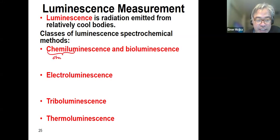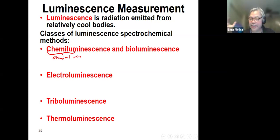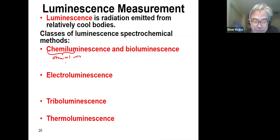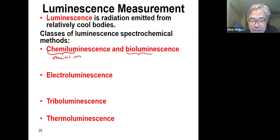Excited analyte species are produced by chemical reaction for chemiluminescence — an example is luminol — and by biological reaction for bioluminescence — an example is fireflies.